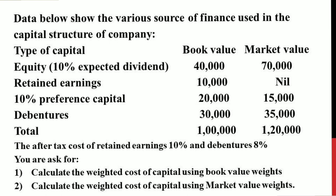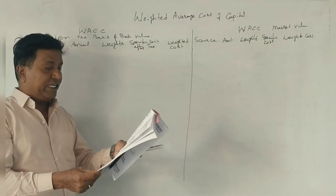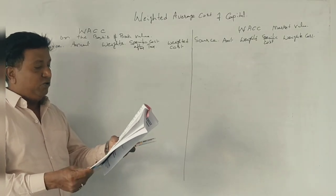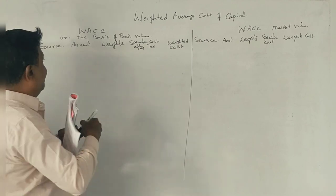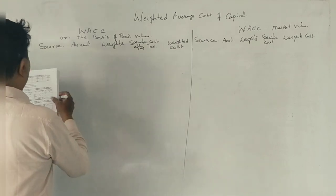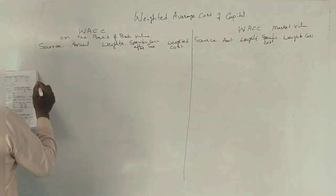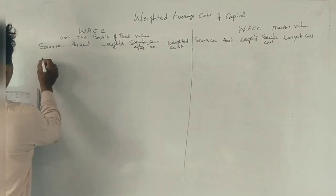After-tax cost: retained earnings is 10%, debentures is 8%. So retained earnings cost is 10%, debentures after-tax cost is 8%. You are asked to calculate the weighted cost of capital using book value and using market value, with ten points for tax benefits. First, I would ask how to calculate the weighted cost of capital — the weights must be equivalent.